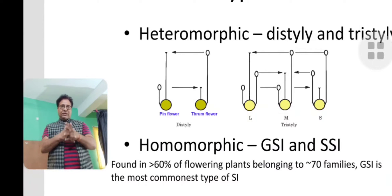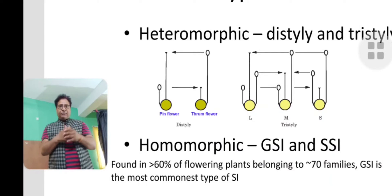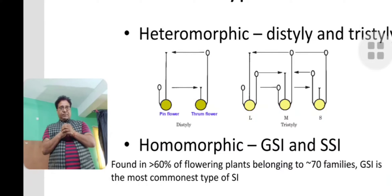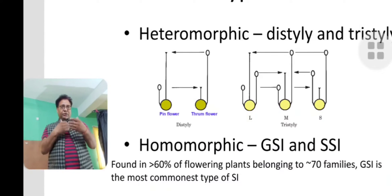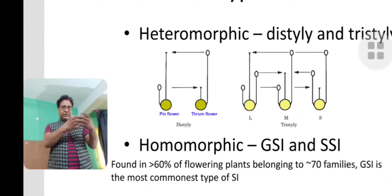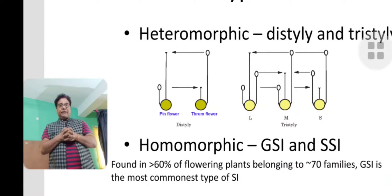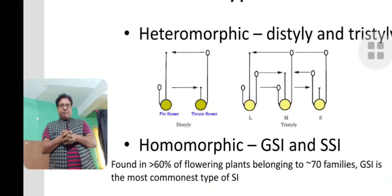Scientists believe there must be some internal factor inhibiting not just pollination but pollen tube growth and fertilization. The same will be the case with tristyly. This mechanism is explained by the S allele factor that is involved in self-incompatibility, which we will discuss shortly.